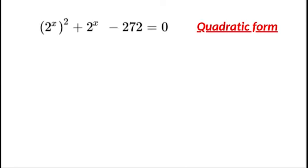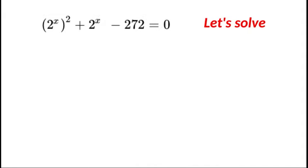So let's solve this and we're going to make a substitution with y is equal to 2 to the power of x. And now let's replace y across the board. So we get y squared plus y minus 272 is equal to 0.